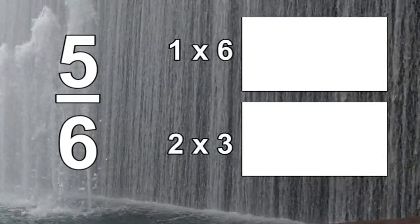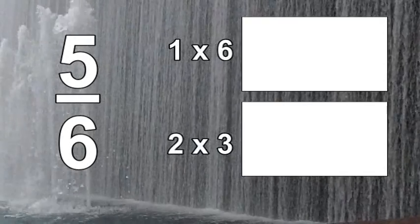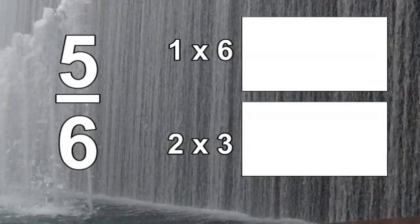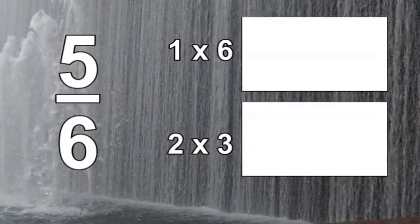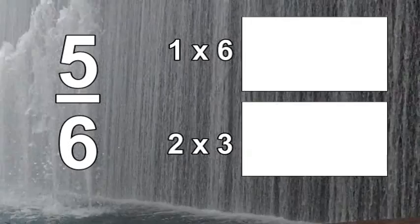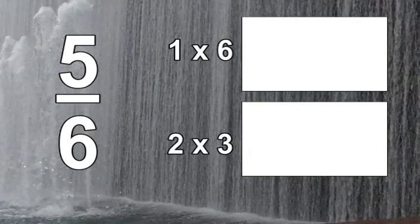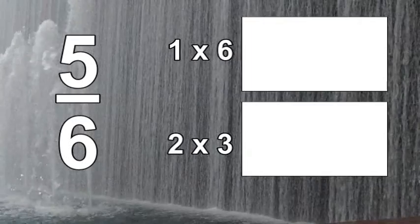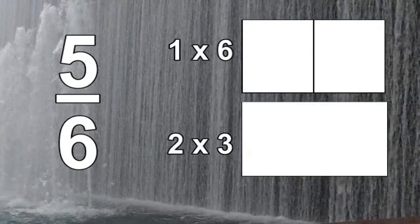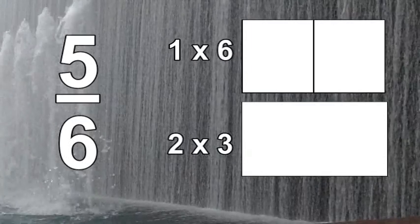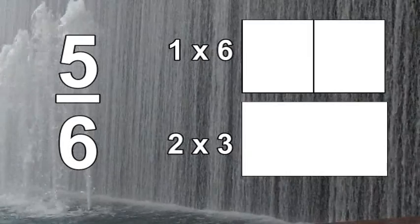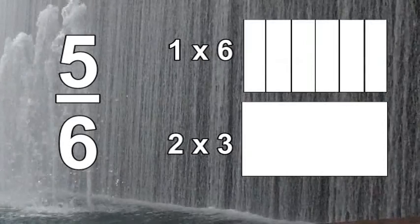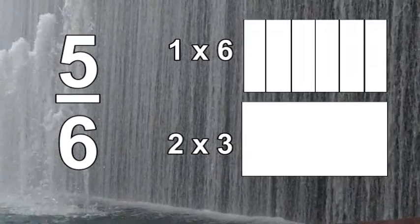You should have started off by factoring 6 to 1 times 6 and 2 times 3. One rectangle will have 6 vertical columns, while the other rectangle will have 2 rows and 3 columns. Let's start by modeling the 1-by-6 rectangle. Since 6 is even, slice it in half — now we have 2 vertical pieces. We need 6, so each side needs 3 pieces. You need to cut each half with 2 slices to end up with 6 pieces.